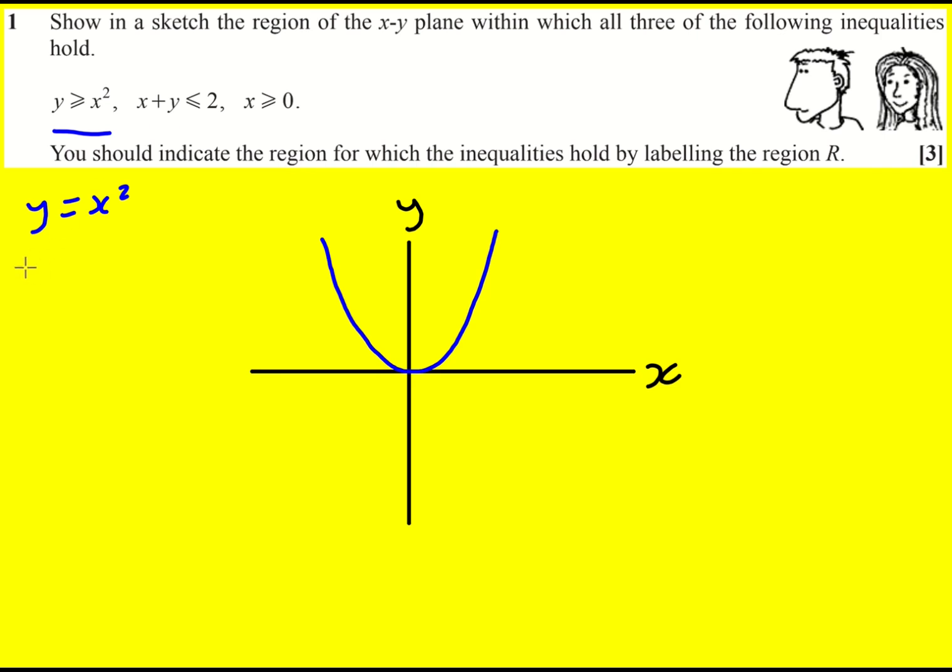Okay, next up, we've got y is less than or equal to minus x plus 2 when I rearrange it. So I'm going to plot y equals minus x plus 2, again with a solid line.